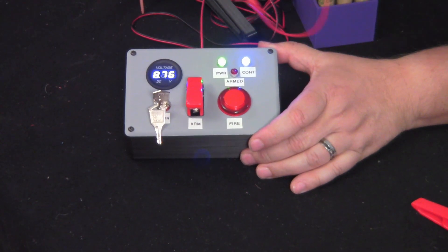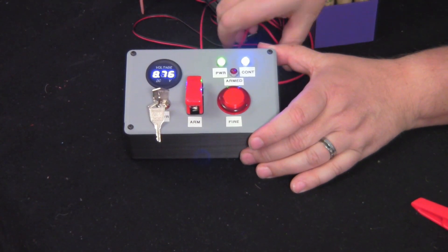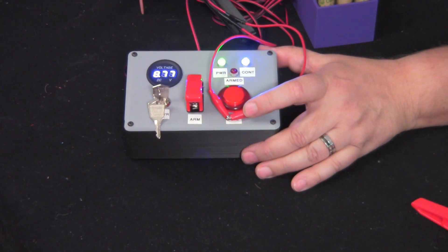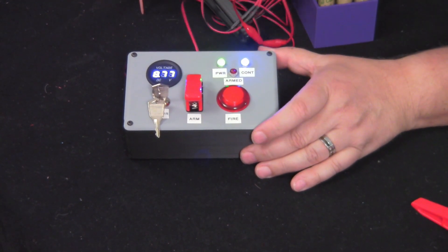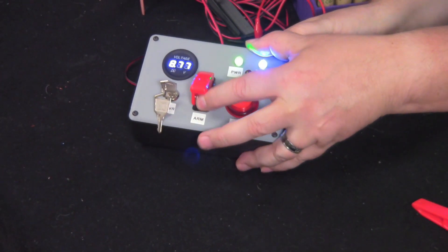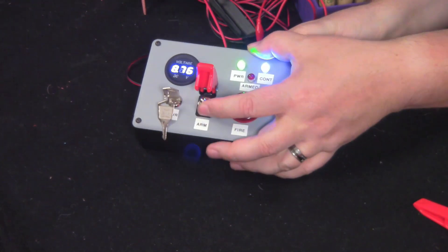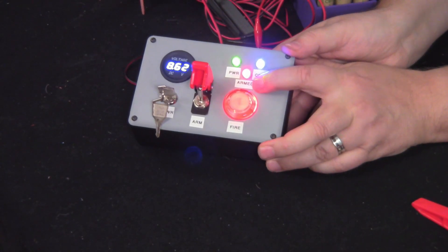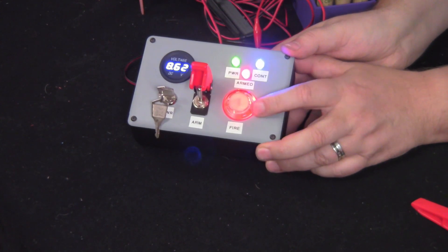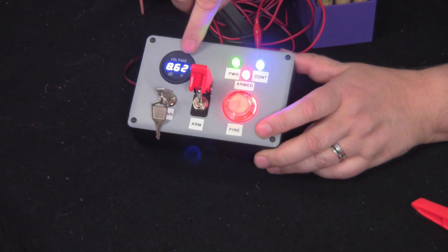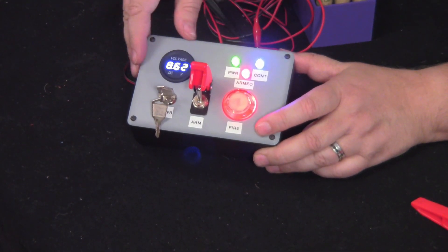That tells us that we've got a nice clean circuit to our Estes rocket igniter. Once you've got continuity, you're going to flip up the switch that says arm. You're going to turn the switch on. What that's going to do is it's going to show you that you're armed and that your fire button is ready to go.